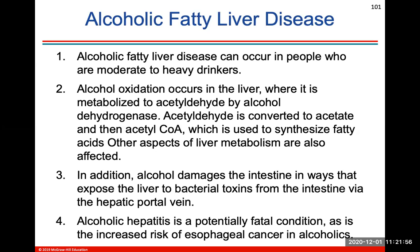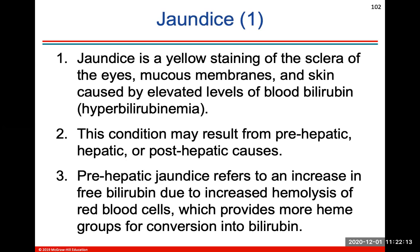Alcoholic fatty liver disease can occur in people who are moderate to heavy drinkers, and this goes through how alcoholic fatty liver disease can potentially grow into a fatal condition with increased risk of esophageal cancer in alcoholics. Jaundice is a yellow staining of the sclera of the eye, mucous membranes, and skin caused by elevated levels of blood bilirubin. This condition may result from pre-hepatic, hepatic, or post-hepatic causes.